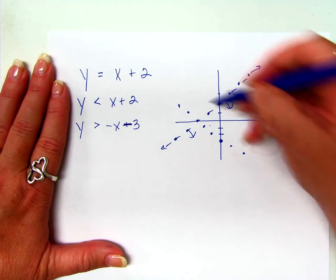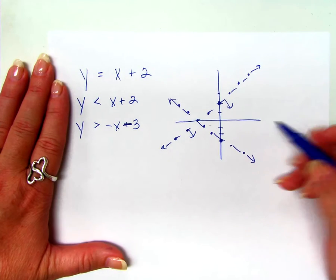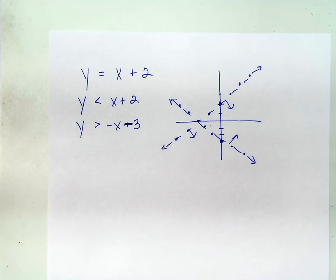Solid or dotted? Dotted. And where do I shade? Above it. Because it's greater than that. So, have I shaded yet? No.